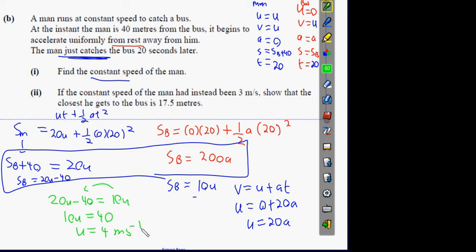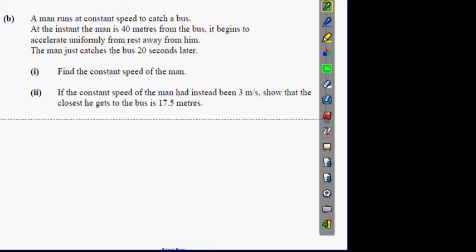If the constant speed of the man had been 3 meters per second, show that the closest he gets to the bus is 17.5 meters. What does that mean about the relationship of part 2 to part 1? Part 2's information has nearly absolutely nothing to do with part 1's information except from the start. We're ready to do this one.